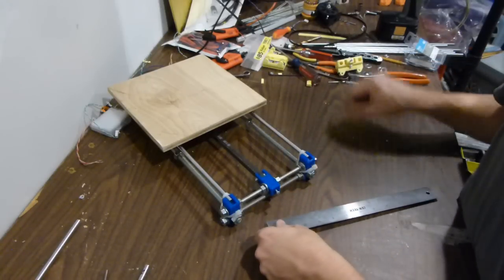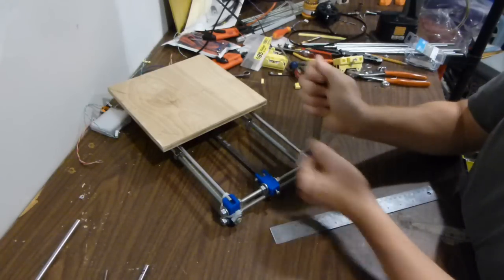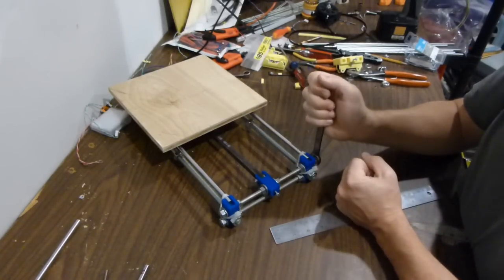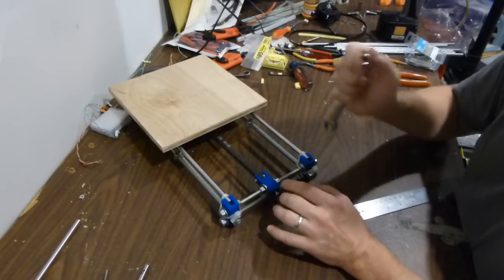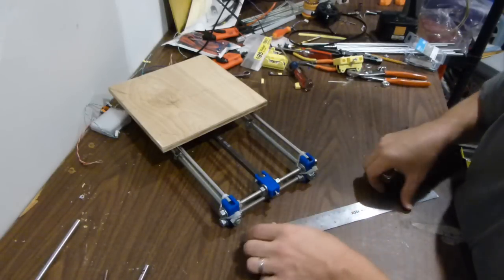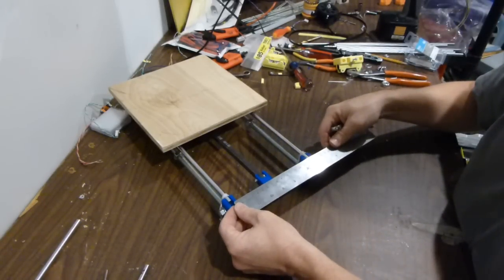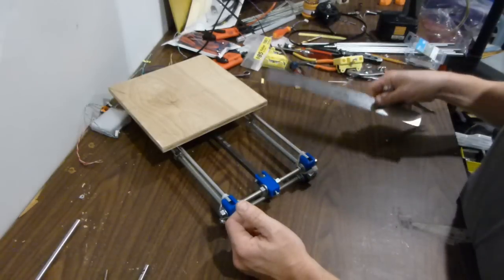You can use a pair of open-end wrenches and you can loosen one side, tighten the other side. You can really precisely control that. Get it as close as you can to 165. Do the same thing on the other side.